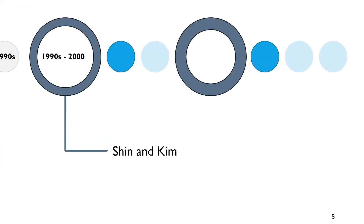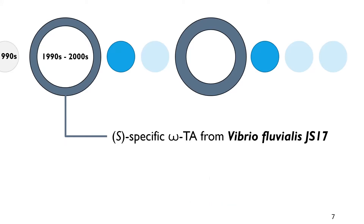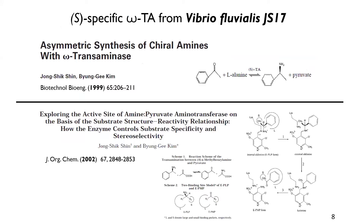The beginning of transaminases as biocatalysts was in the late 1990s to the early 2000s, when Shin and Kim identified the first omega transaminase by enrichment-based cultivation from Klebsiella pneumoniae and Bacillus thuringiensis. They fed alpha-methylbenzylamine as a main nitrogen source and identified those two omega transaminases. With the same method, also the S-specific omega transaminase from Vibrio fluvialis was identified by Shin and Kim.